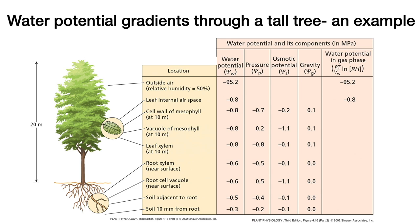Let's look at water potential gradients through a tall tree. Starting in the soil, 10 mm from the root, the water potential is −0.3 MPa, with a pressure potential of about −0.2 MPa and an osmotic (solute) potential of −0.1 MPa; gravity has no effect at this distance. The soil adjacent to the root has a slightly lower water potential of −0.5 MPa with a slightly lower pressure potential due to the soil matrix potential. As we move from soil to root to stem to leaf to atmosphere, the water potential becomes increasingly negative, providing the continuous gradient that drives water transport all the way up the plant.